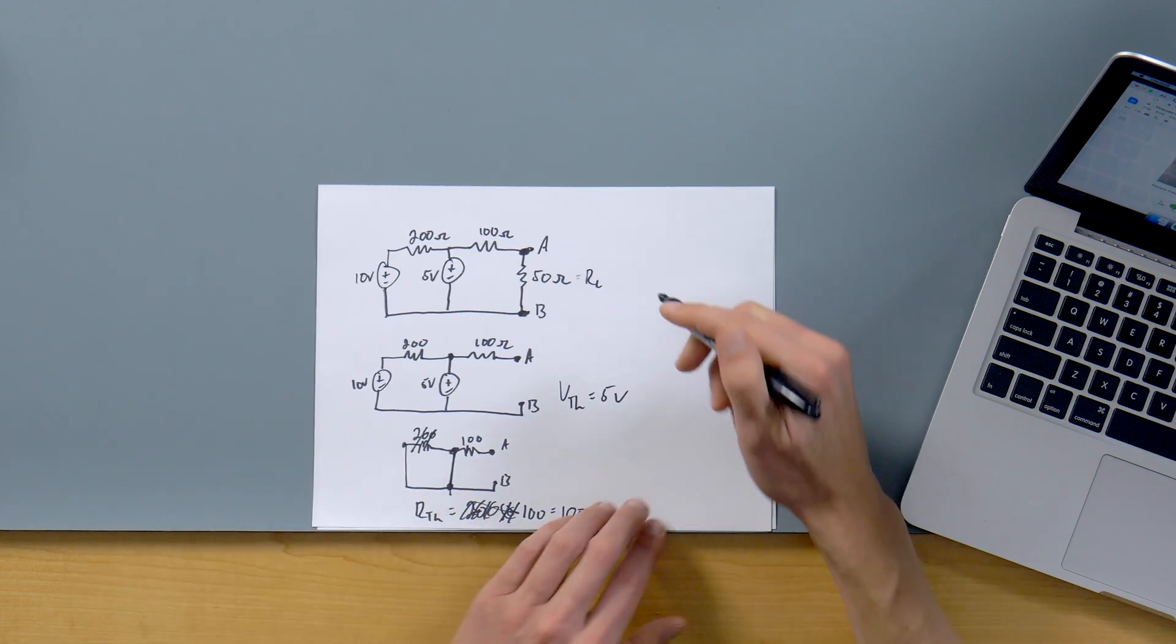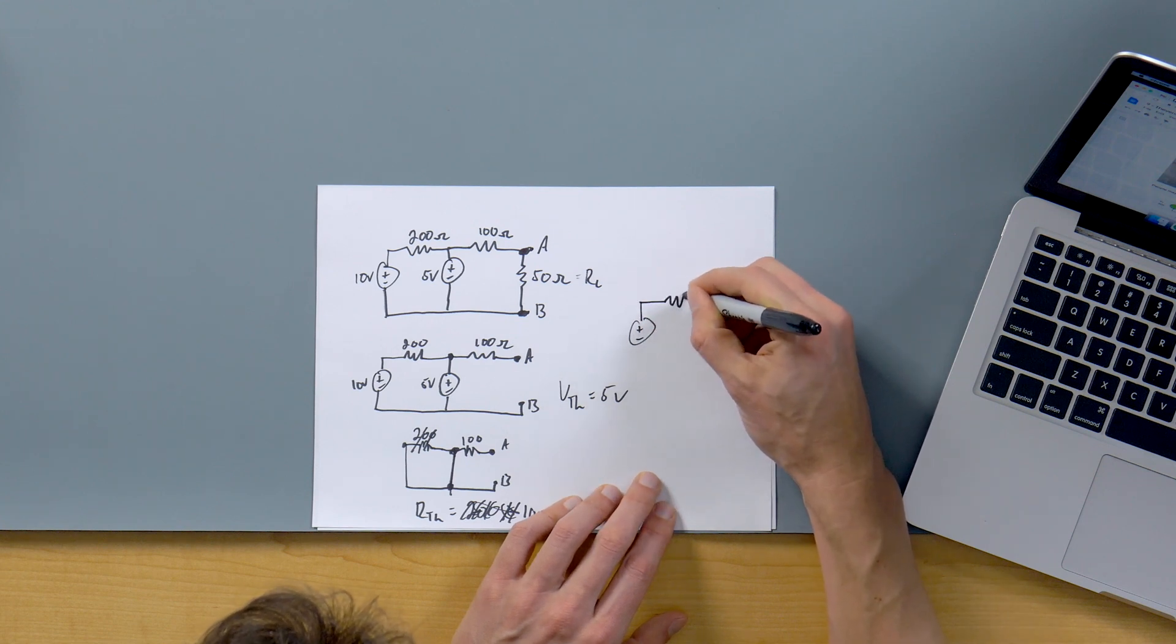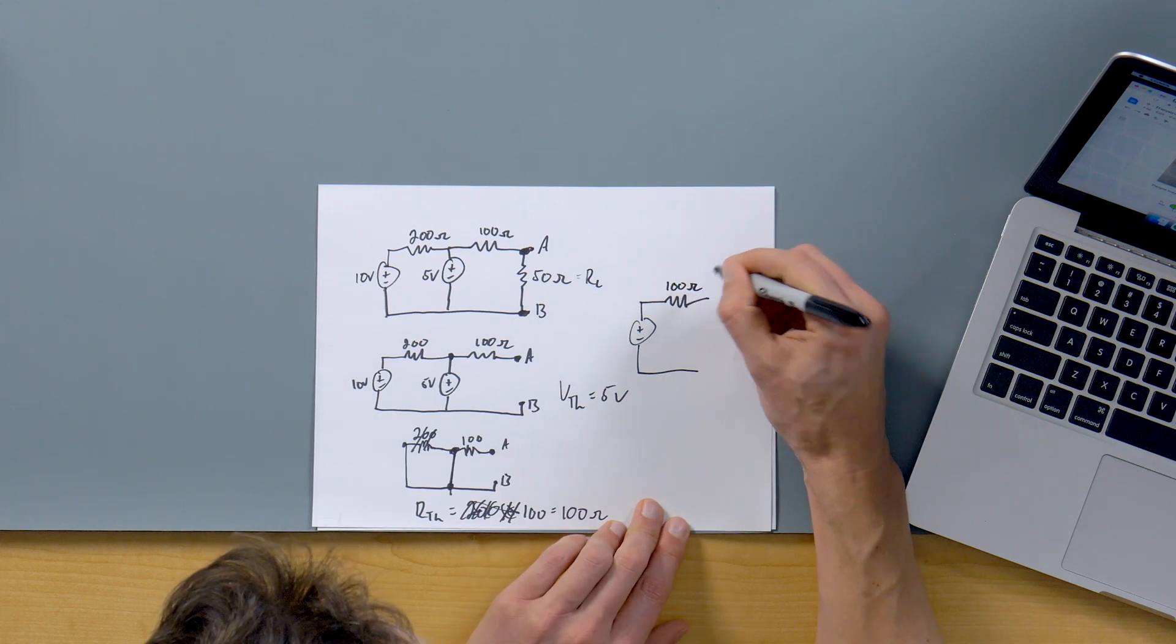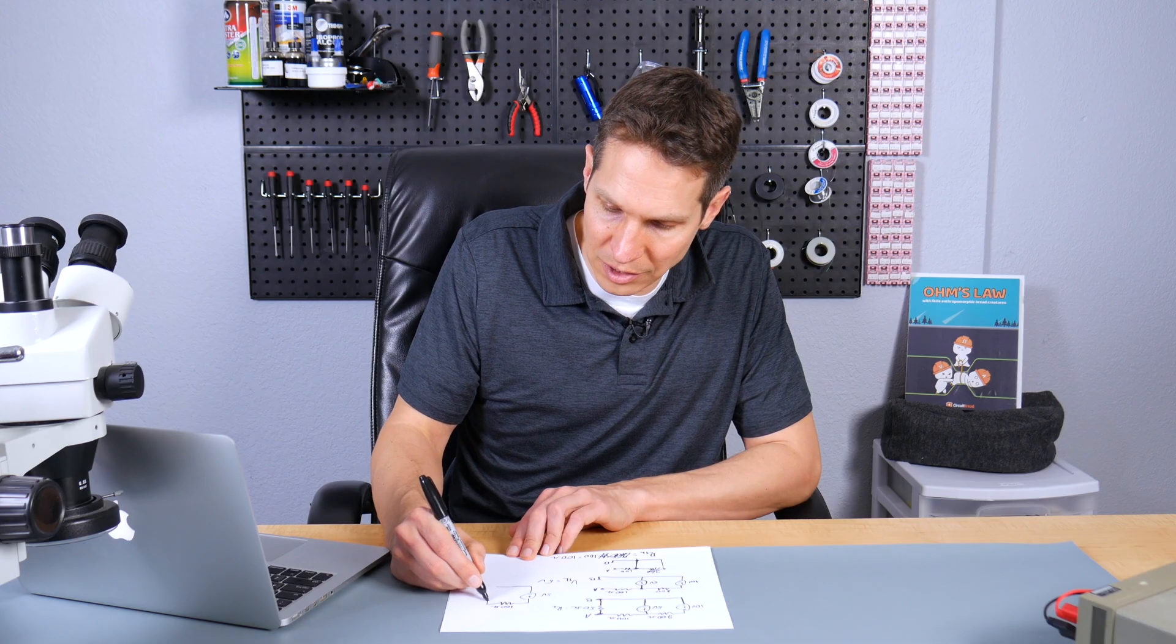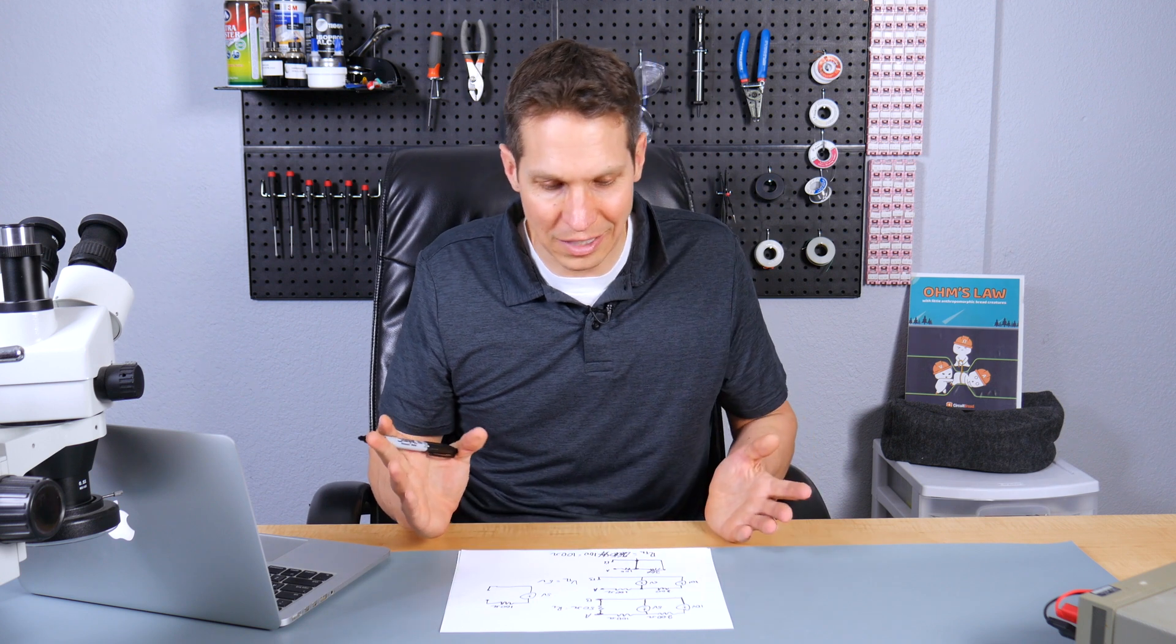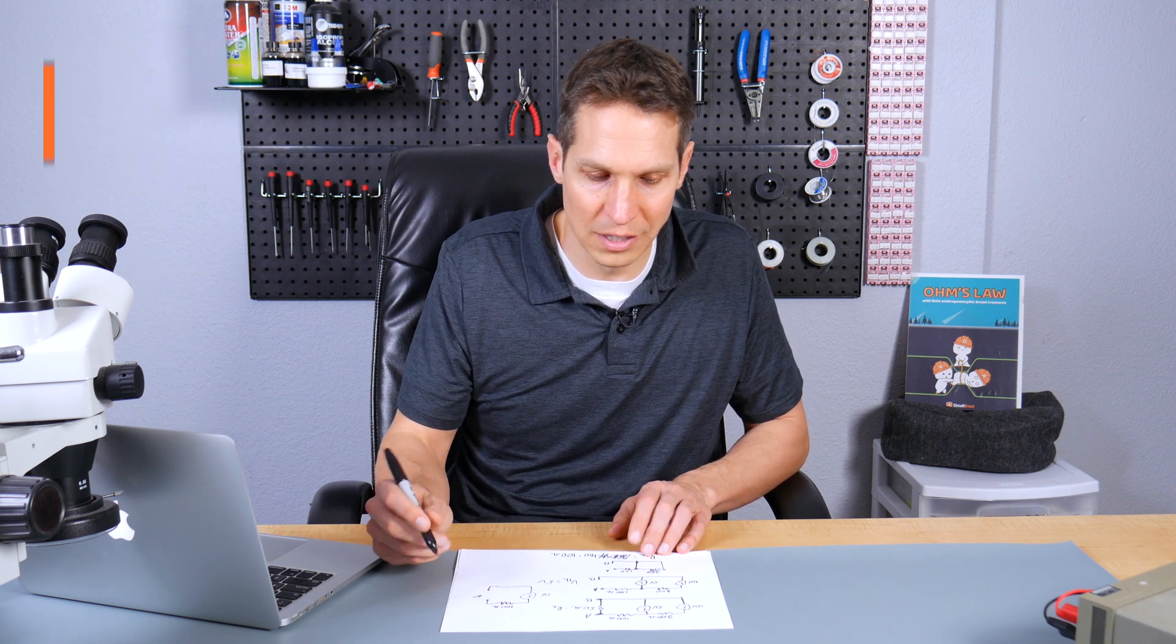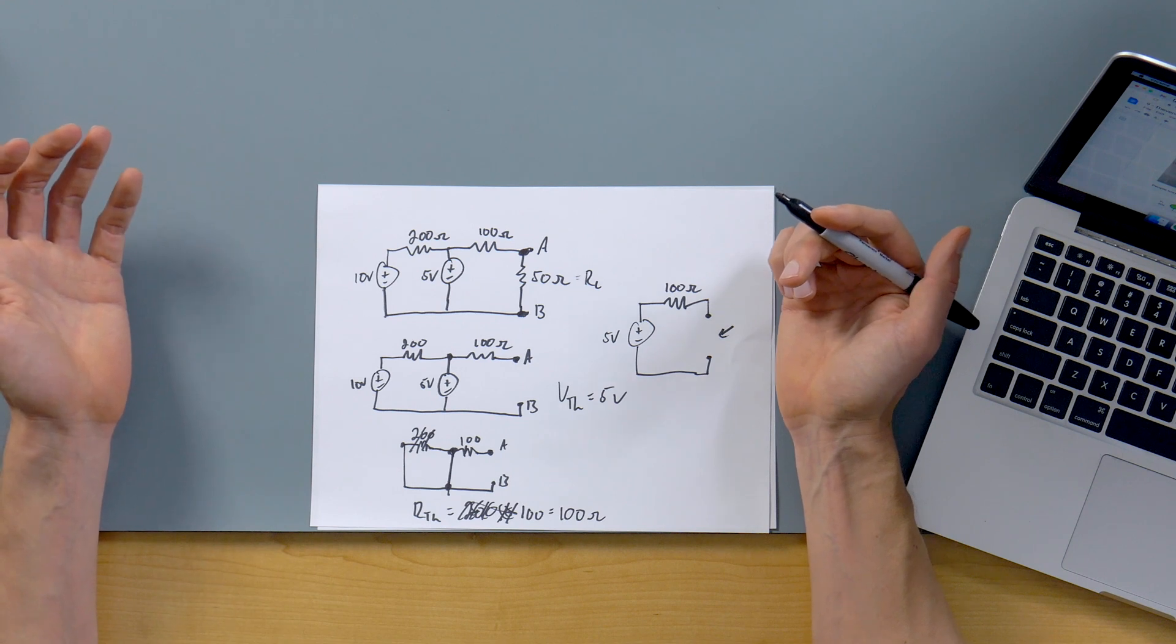And so now we can just redraw this beautiful circuit like this. And our R Thevenin is 100 ohms and our V Thevenin is five volts. Now the fun thing about this is if you look at it, this makes a lot of sense. So as we go on to that last step of the sanity check, since we're assuming we put that R load in there, we can look at the full thing and think, yeah, that makes sense.